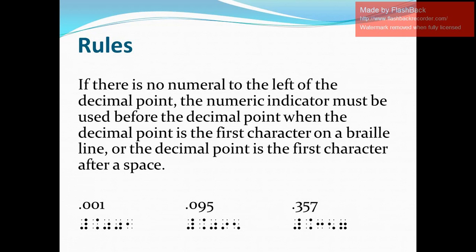Let's take some examples. The first one is 0.001. In Nemeth, we write the numeric indicator first, then the decimal point, and then the digits 0, 0, and 1. Here in application of the rule, we need to write the numeric indicator before the decimal point since there is no number to the left of the decimal point.